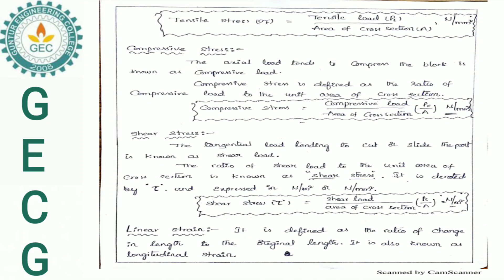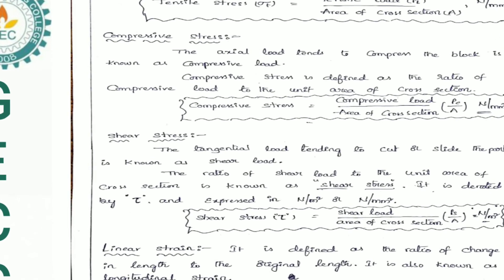Now, the second type of stress: Compressive Stress. What is compressive stress? The load that tends to compress the bar is known as compressive load. Compressive stress is defined as the ratio of compressive load to the unit of cross sectional area. Finally, compressive stress = Pc / A Newton per mm².